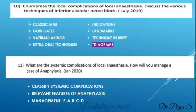What are the systemic complications of local anesthesia, and how do you manage a case of anaphylaxis? The answer can be referred from the chapter on systemic complications of local anesthesia in Malamed. First classify all the systemic complications. Then note the relevant features of generalized anaphylaxis — mention all the signs and symptoms — and briefly explain the management: what is P, A, B and C, and then in detail the definitive management. All these points can be referred from the same chapter.